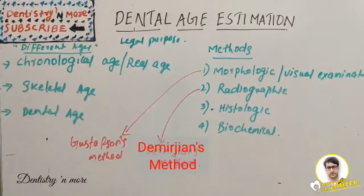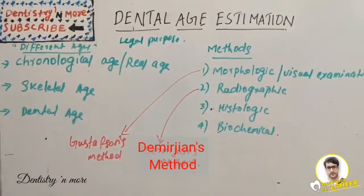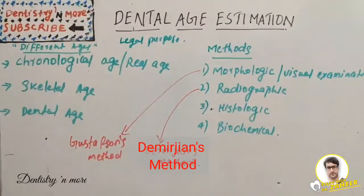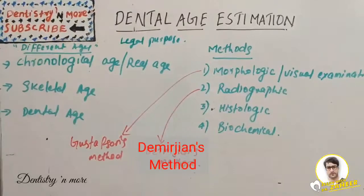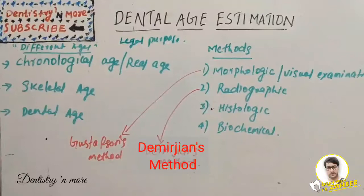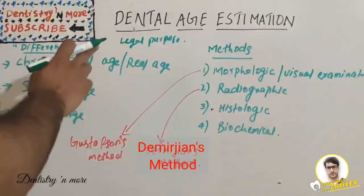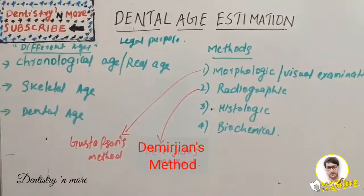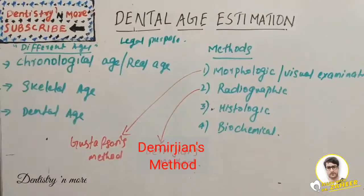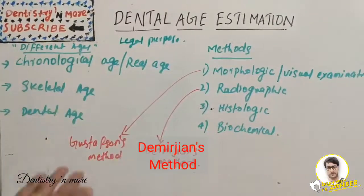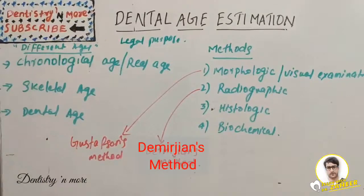Age estimation is an important factor in biological identification in many forensic fields such as forensic odontology, forensic medicine, forensic anthropology, and forensic osteology. It helps to narrow the search possibilities for unidentified dead people or living individuals, mainly for legal purposes. It also helps to determine the age of criminals, mainly those in the younger age group, because the punishment differs between adults and minors.